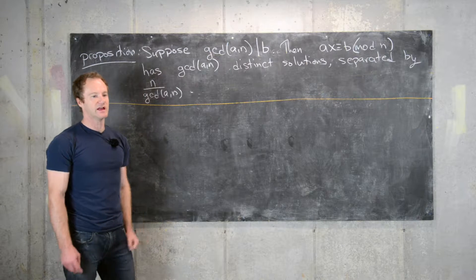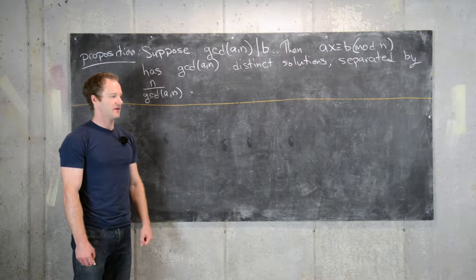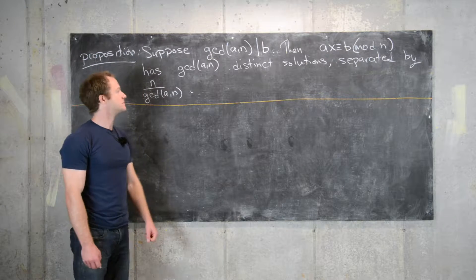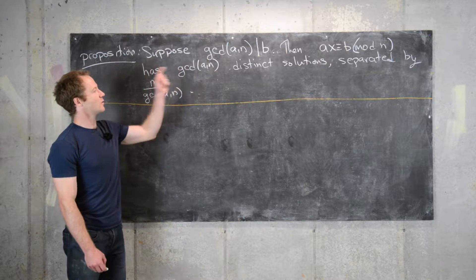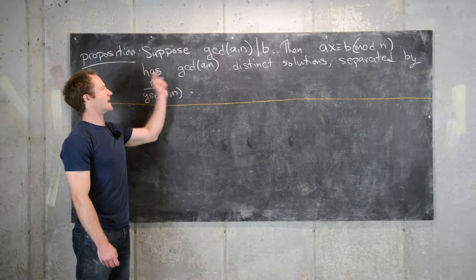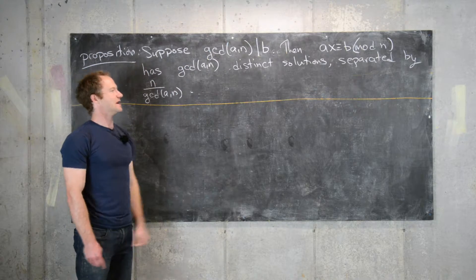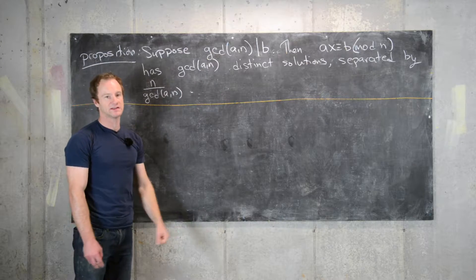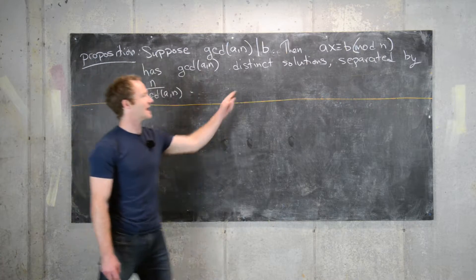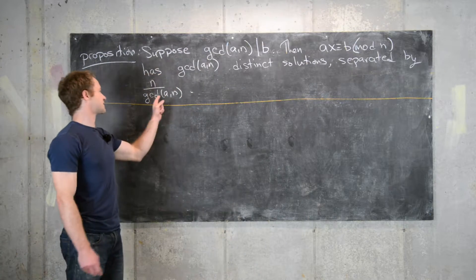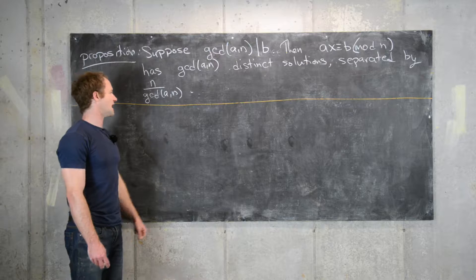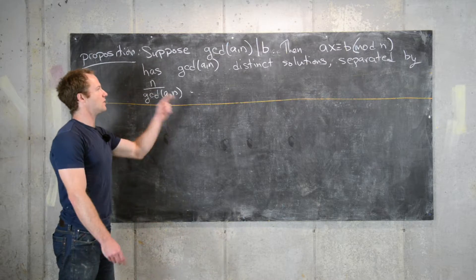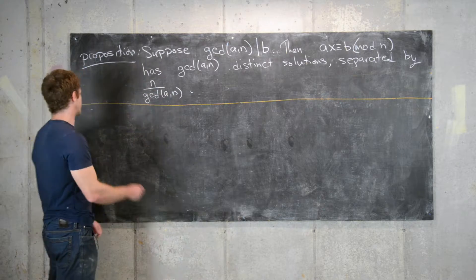Via an example we noticed that there are potentially more than one solution. Here we'll find out exactly how many solutions there are: there are GCD(a,n) solutions, and each of these solutions are separated by n over the GCD of a and n. So let's get going with the proof.